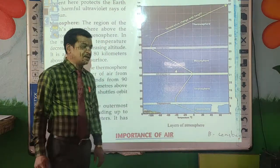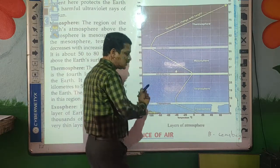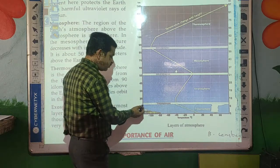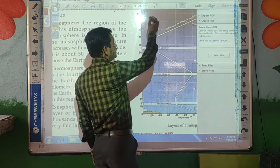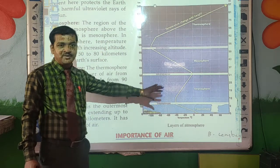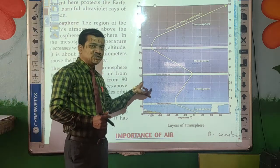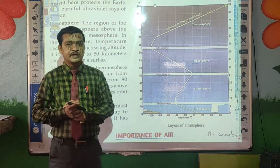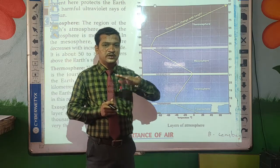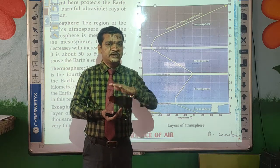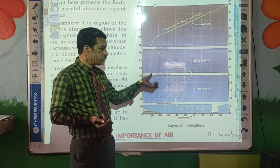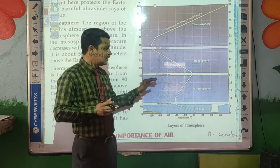The second layer of the atmosphere is the Stratosphere, just above the Troposphere. This layer extends from 10 km to 50 km away from the Earth. Aircrafts and aeroplanes fly in this region. The ozone layer is also present here, which filters ultraviolet rays that are very harmful to our skin and to plants. If these rays fall on our body, we may suffer from cancer. The ozone layer is reducing day by day, so we should take care of it.